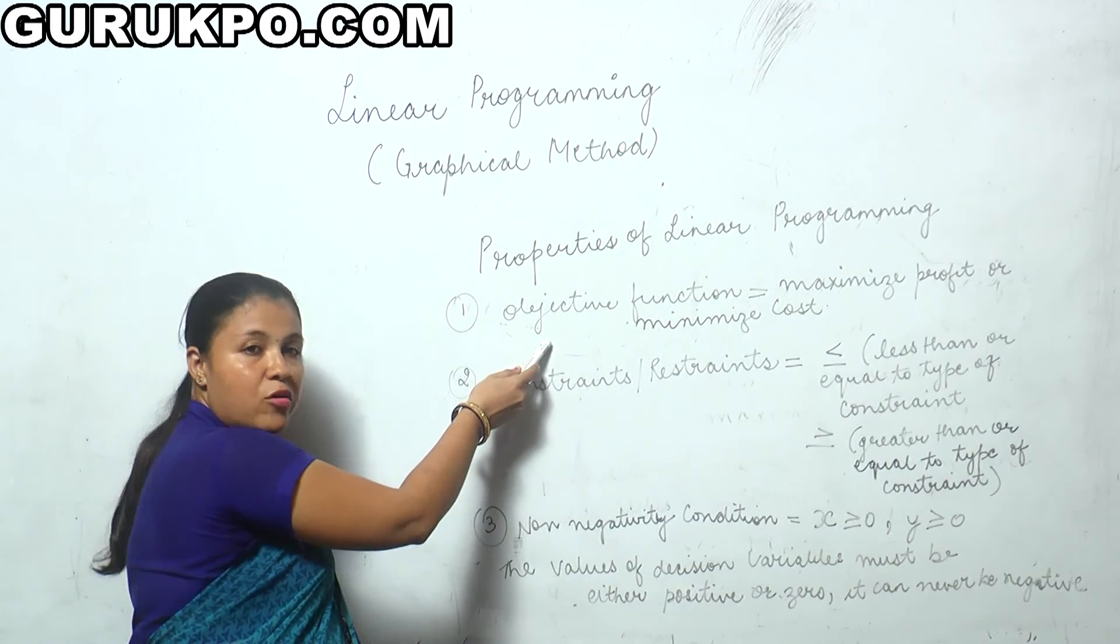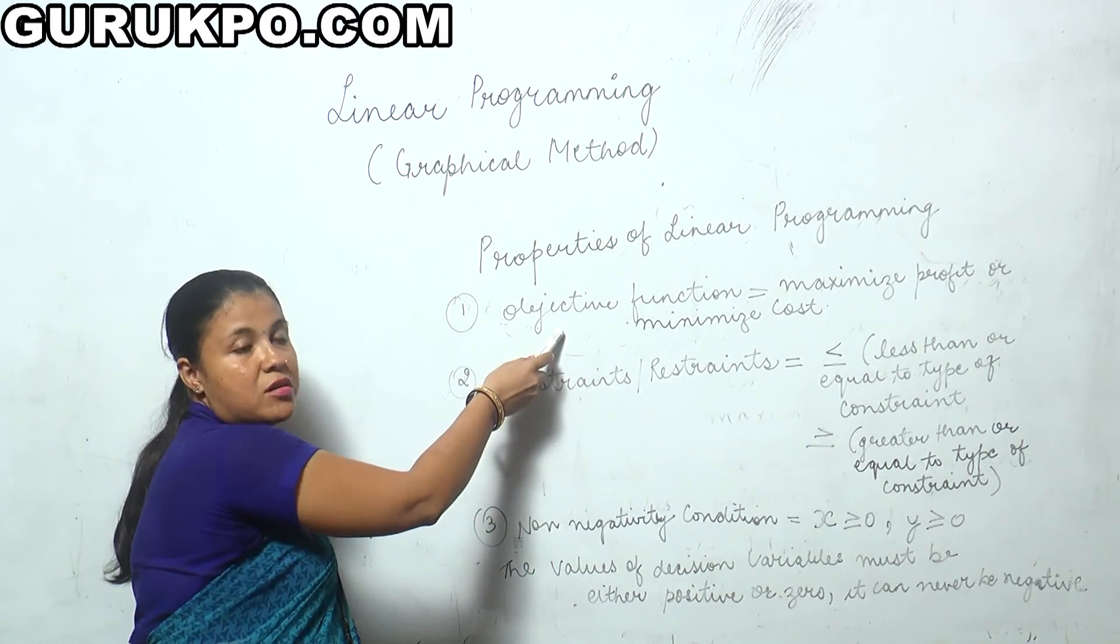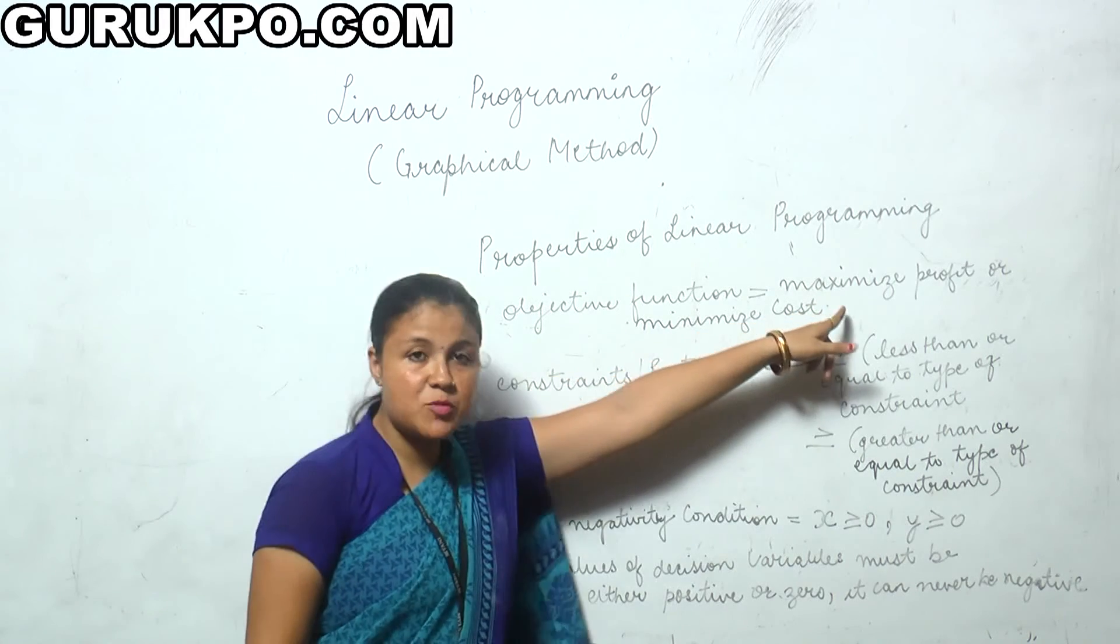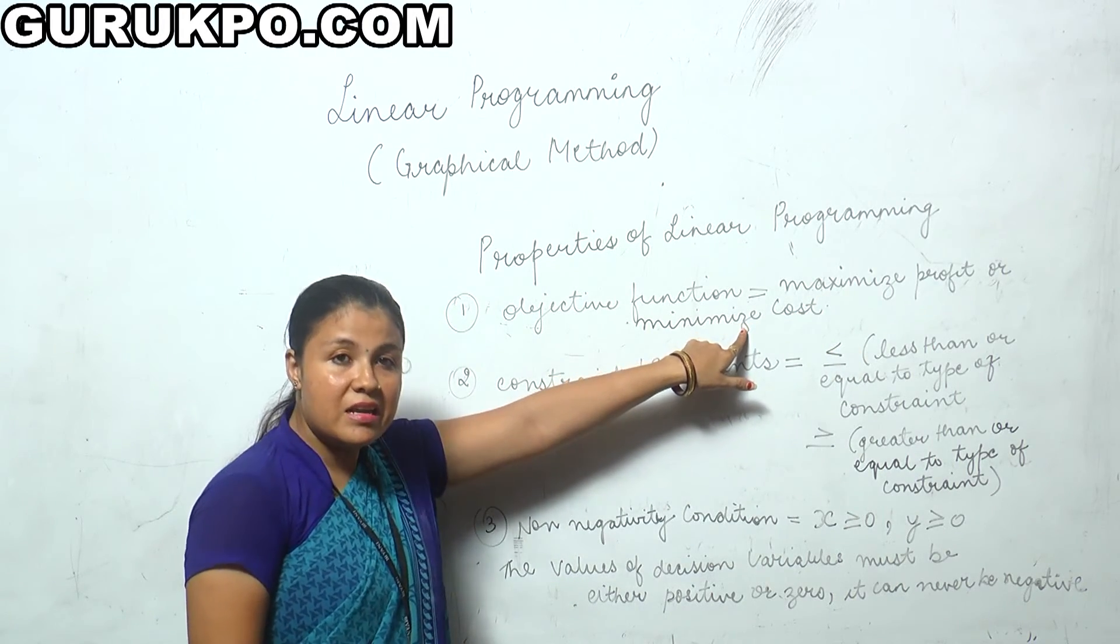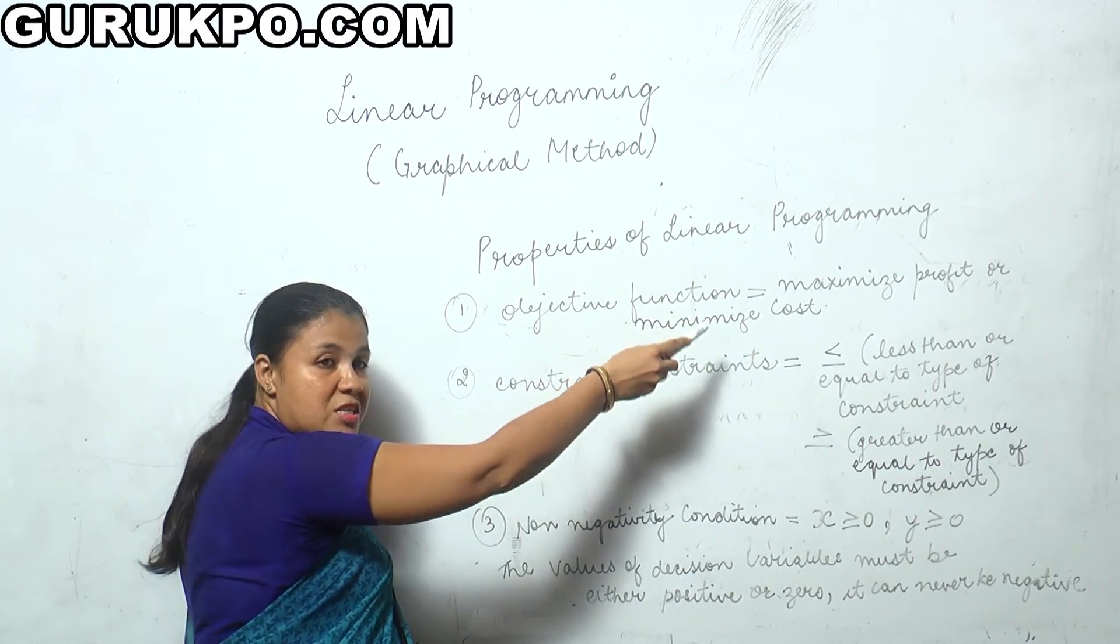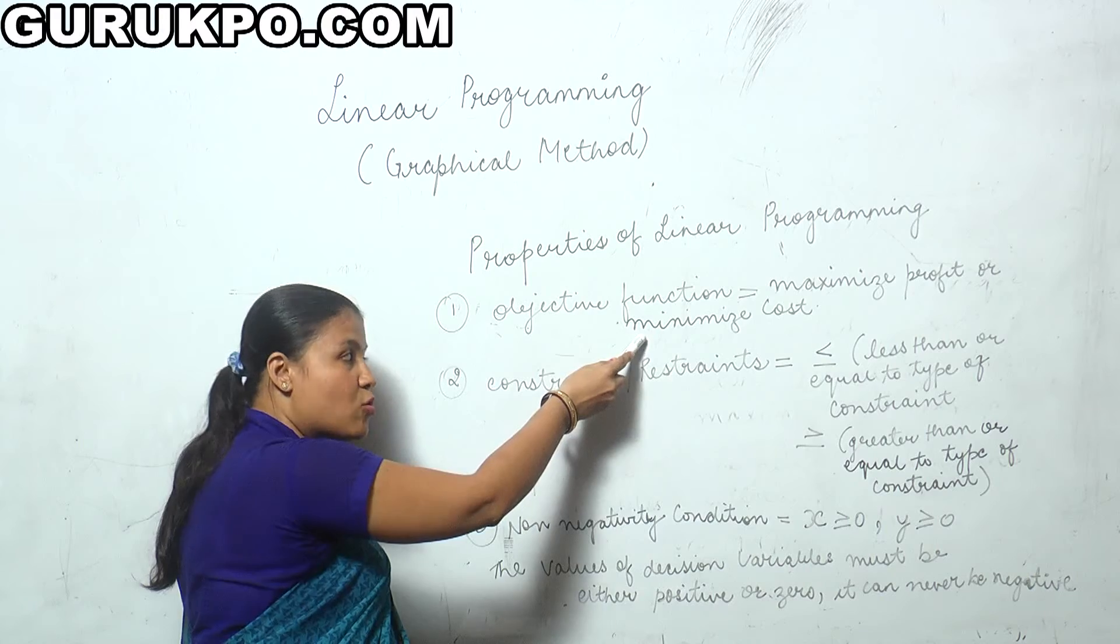Now concentrating on the first, the objective function. The objective of linear programming is either to maximize profit or to minimize cost. In every LP problem, the objective should be either to maximize profit or minimize cost.